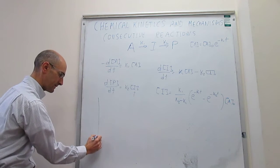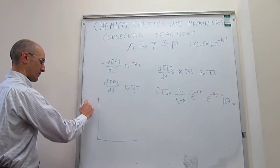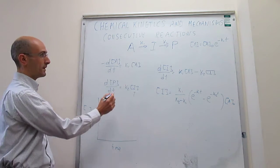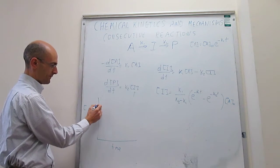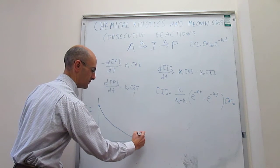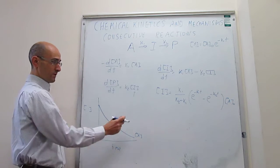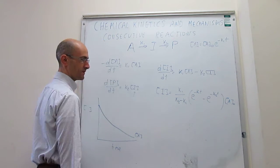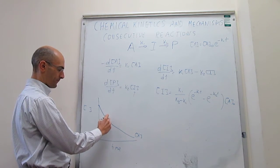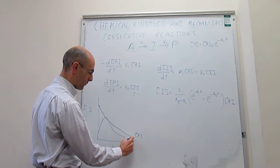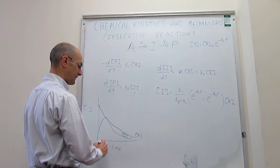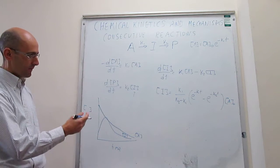One of the things we can do is see how the concentrations change over time by plotting them as a function of time. If we plot the concentration of reagents, that is just first order decay, something like a decaying exponential. That is what happens to the concentration of A. The concentration of the intermediate, depending on what K1 and K2 are, would show a rise and then a fall. We still have to see what happens to the concentration of product.